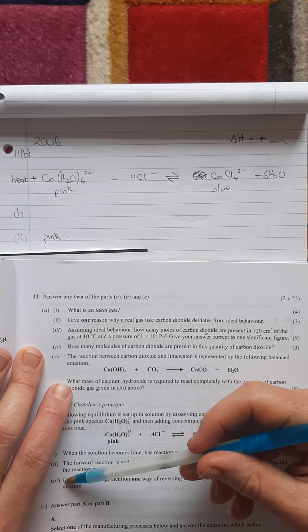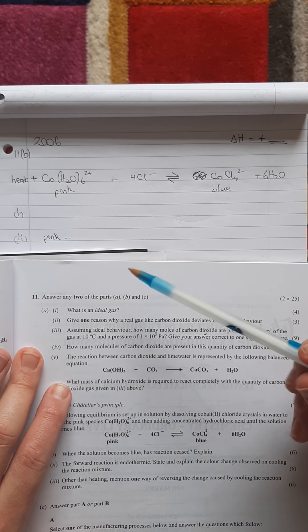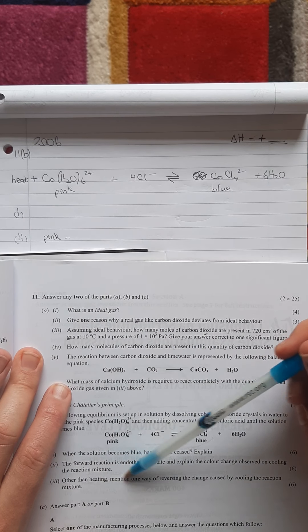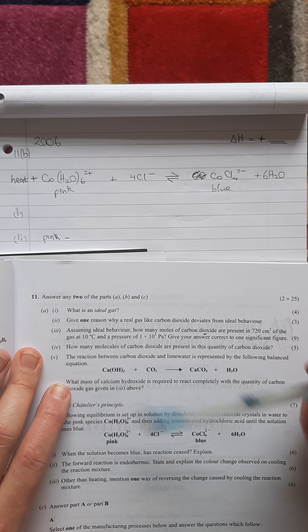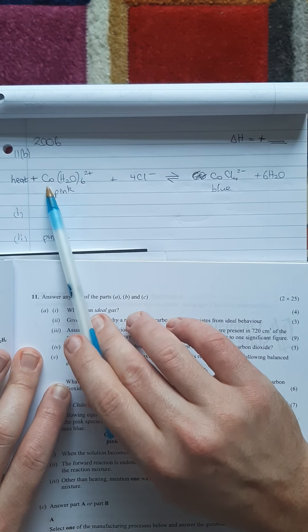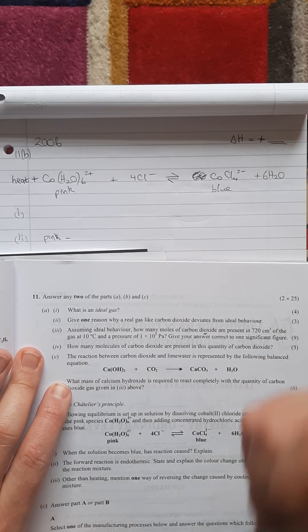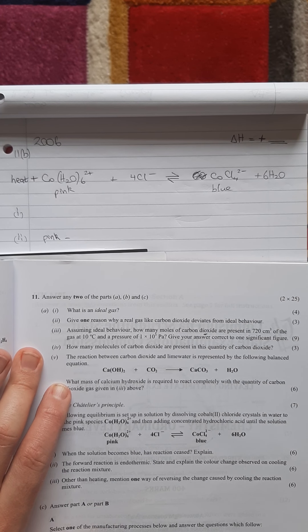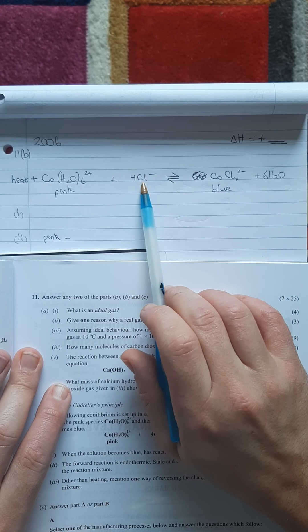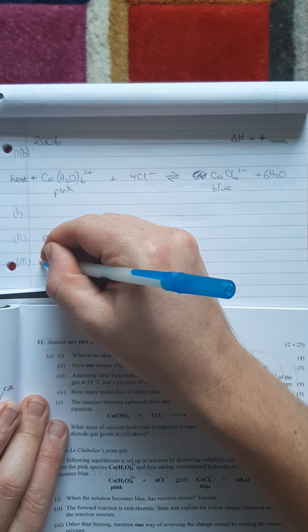In part three: other than heating, mention one way of reversing the change caused by cooling the reaction mixture. We know it goes pink if you cool it down. Part three asks us to try and reverse that, so make it go blue again. You could heat it up, but it did say other than heating. Probably the easiest thing you could do is introduce more of the chloride ions. If you introduce some of the chloride ions, add chloride ions.